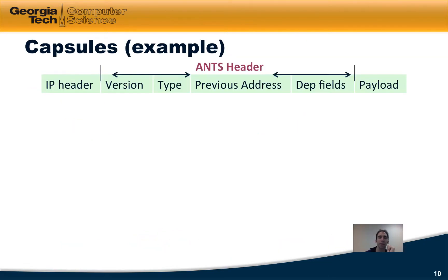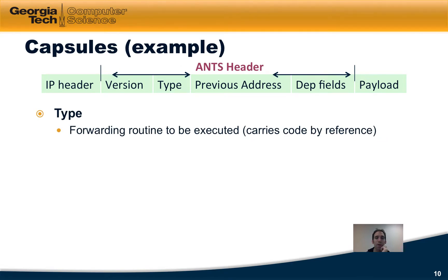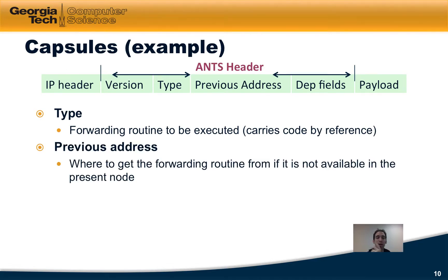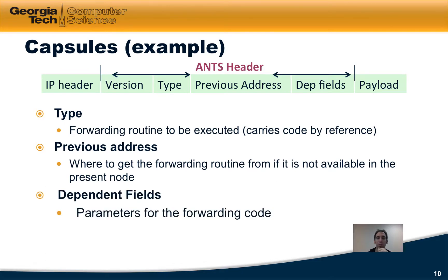Let's take a quick look at capsules. Capsules essentially expand the existing packet header — in addition to the regular IP header and payload, you would have an active networking header. This particular one was the ANTS header, developed at MIT. This header had a few additional fields: the 'type' specified the forwarding routine to be executed by code reference; the 'previous address' told the node where to obtain the forwarding routine if not available locally; 'dependent fields' allowed the packet to pass parameters into the code; and then there was the payload itself.